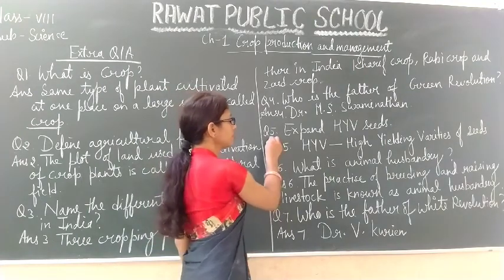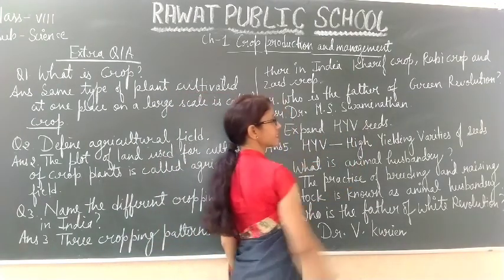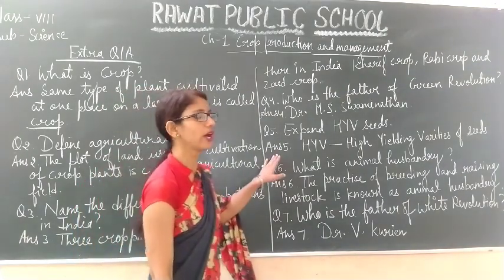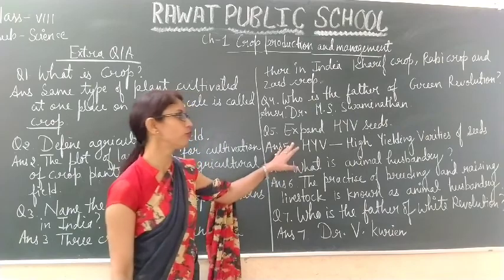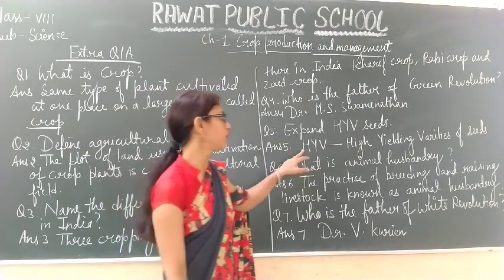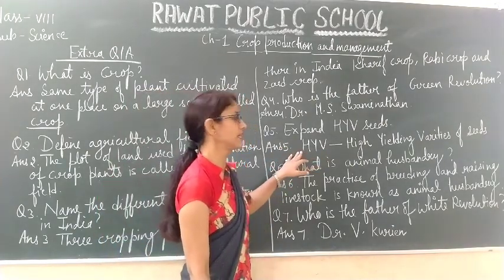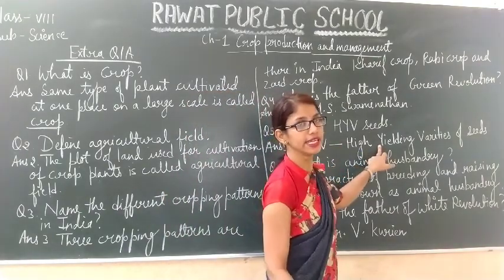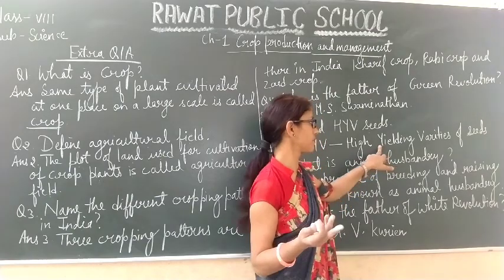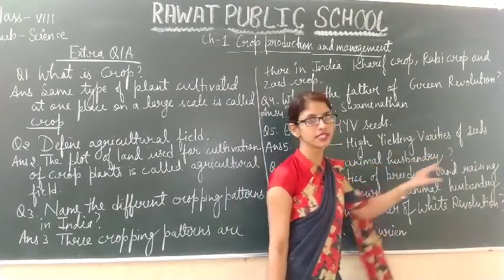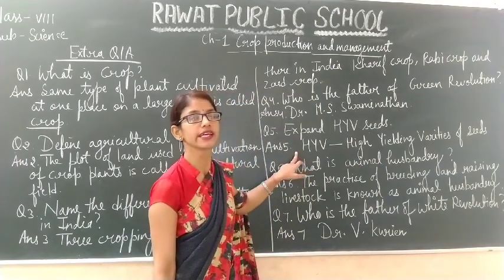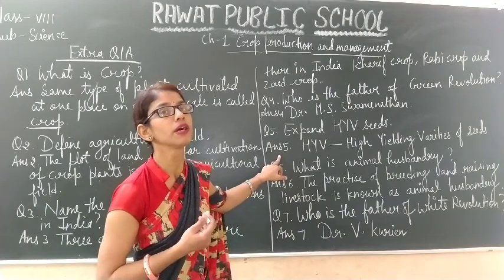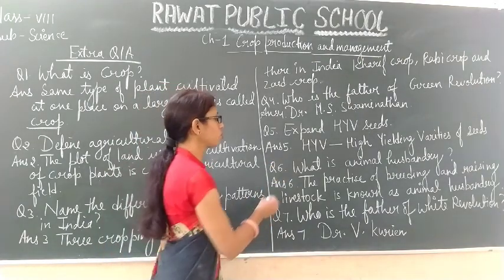Question five: Expand HYBCs. You have to write the full form of HYBCs. H stands for High, Y stands for Yielding, and the full term refers to High Yielding Varieties of Seeds. HYBCs stands for seeds which give high yield of crop production.